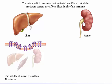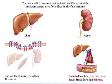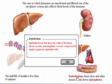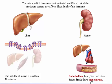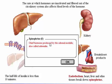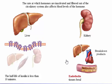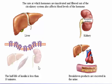The half-life of insulin is less than 10 minutes. Epinephrine is taken up by endothelium, heart, liver, and other tissues. A single pass through a capillary bed removes 90% of circulating catecholamines. Epinephrine is broken down by enzymes, and breakdown products are excreted in the urine. The half-life of epinephrine is about 10 seconds.